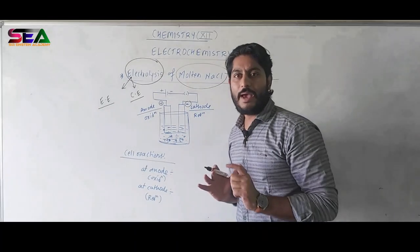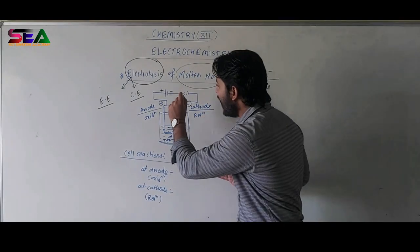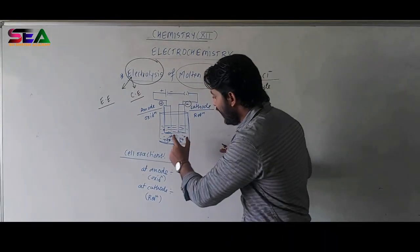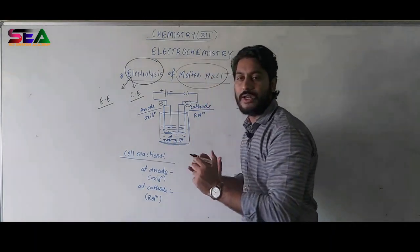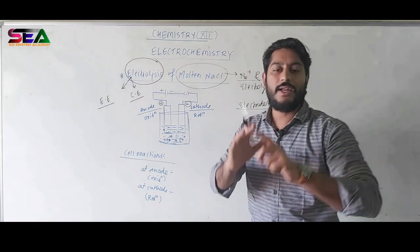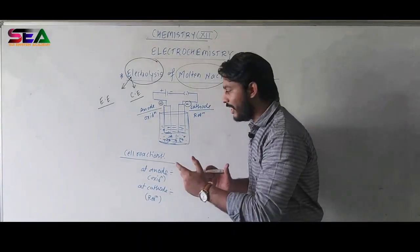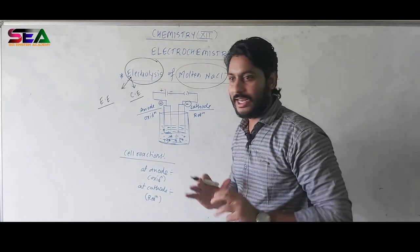Now, what will happen? The moment you start the electric setup, the moment you start electricity to flow across this particular circuit, the oppositely charged ions or the charged ions in the solution will simply come in action mode. What will be their action mode? It will be simply positively charged ions will attract towards negative terminal and negatively charged ions will attract towards positive terminal.